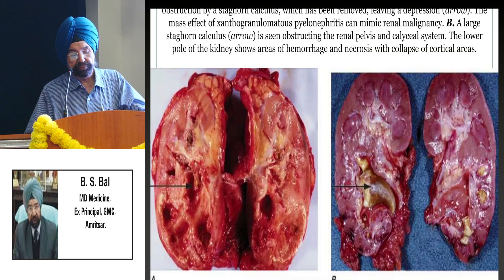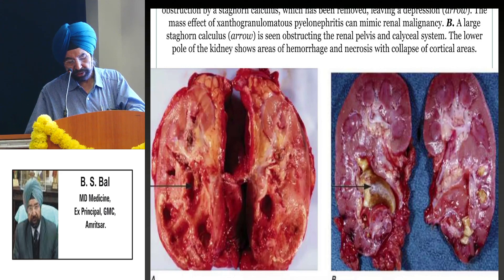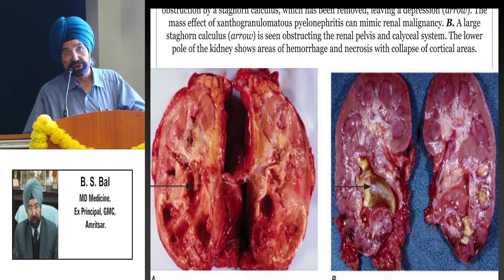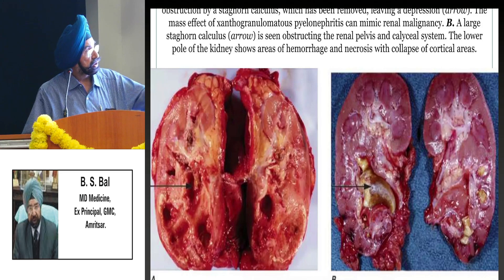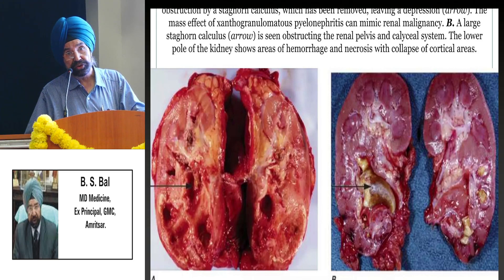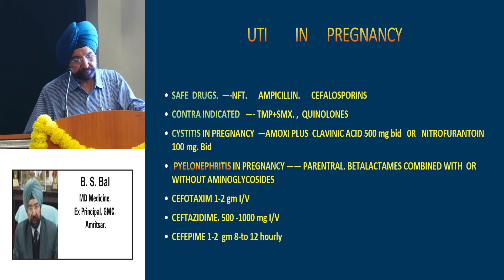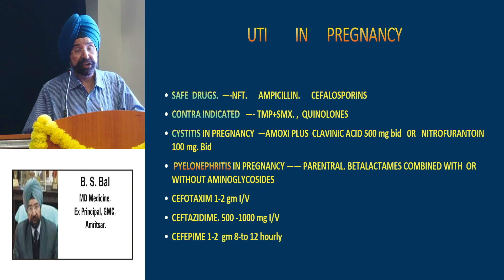In xanthogranulomatous pyelonephritis, one diagram shows a staghorn-type stone on the left side which has destroyed the lower part of the kidney; on the other side the stone has been removed but the kidney is still affected and destroyed — this is chronic pyelonephritis where surgery is sometimes needed.